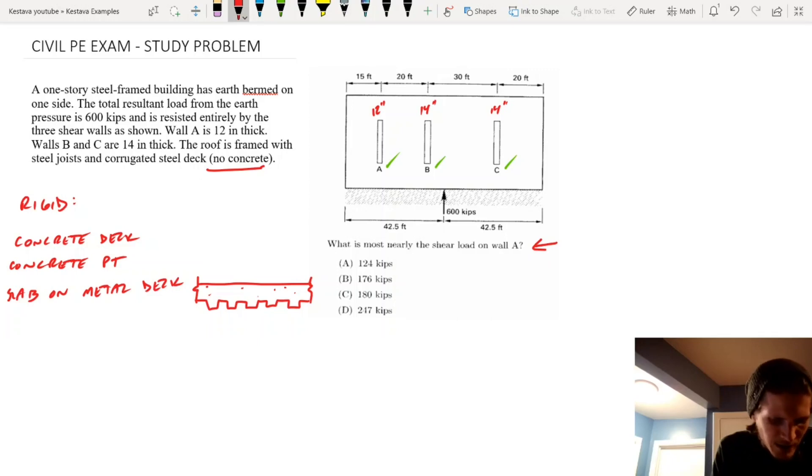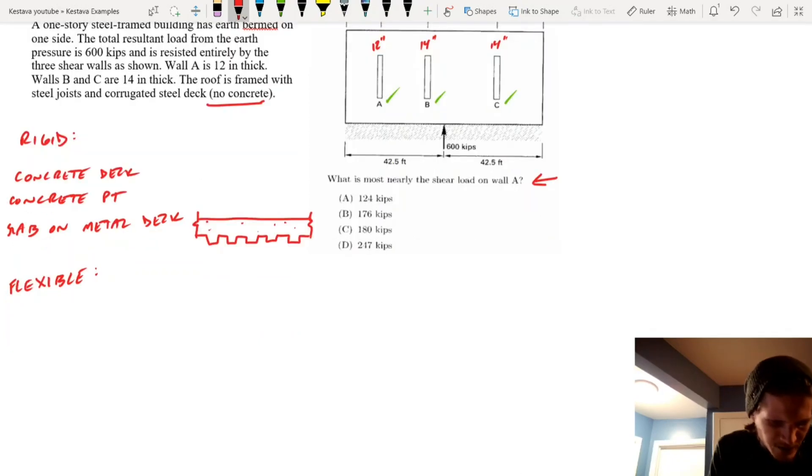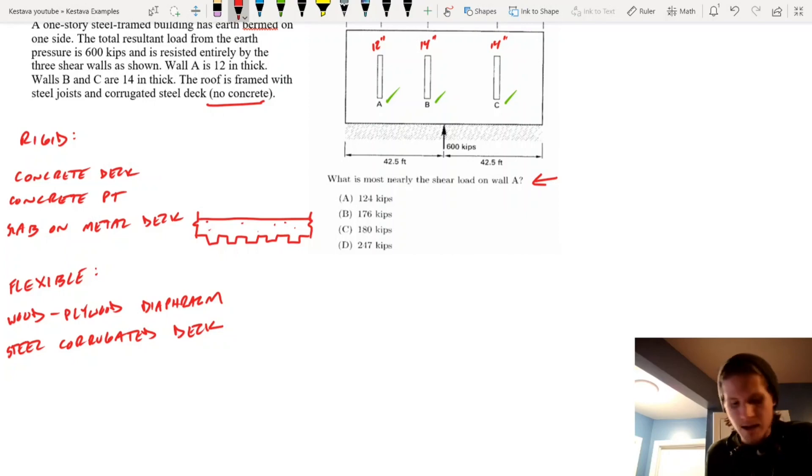Then you have flexible, and that's going to be wood, wood plywood diaphragms, steel corrugated deck. And off the top of my head, I honestly can't think of any others right now, but that's a quick little list that you can write down yourself and paste that into one of your books that you're going to be taking for the PE, or just really drill that home that these are rigid, these are flexible.